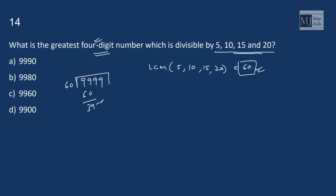We get 39 as remainder. So 9999 minus 39 is 9960 is the greatest 4 digit number, which is divisible by 60 or which is divisible by 5, 10, 15 and 20. 9960 option C.